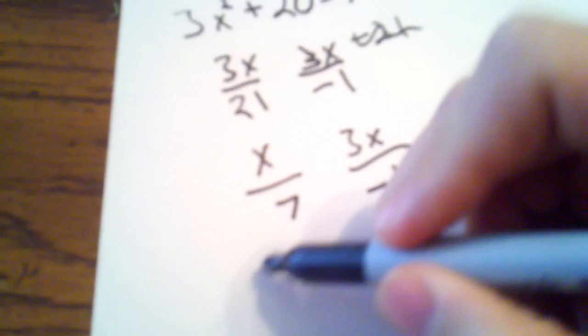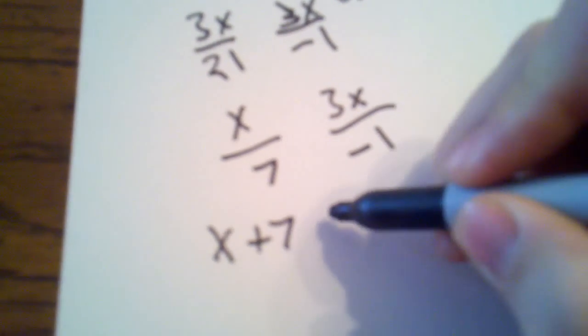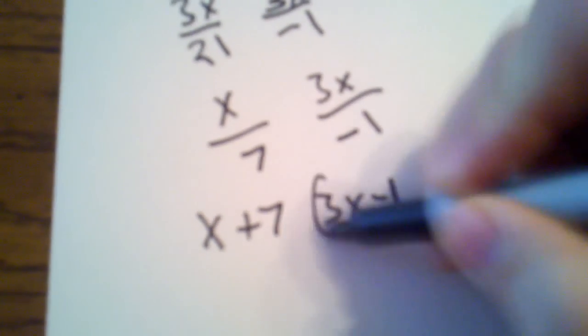So, from here, you just simply take this down, and you put x plus 7, and a 3x minus 1. And there is your answer.